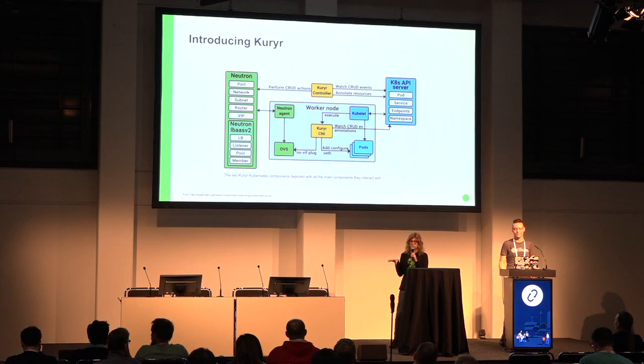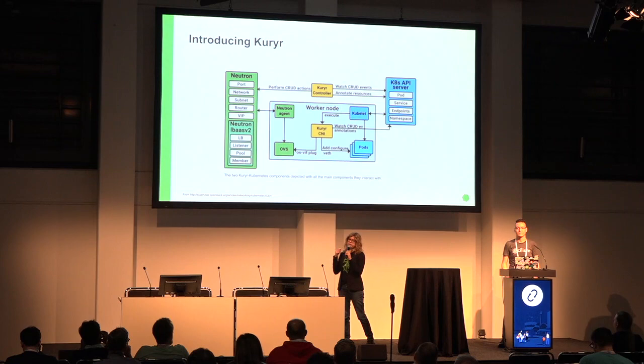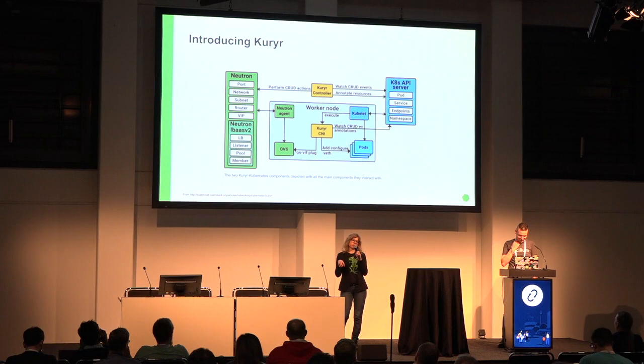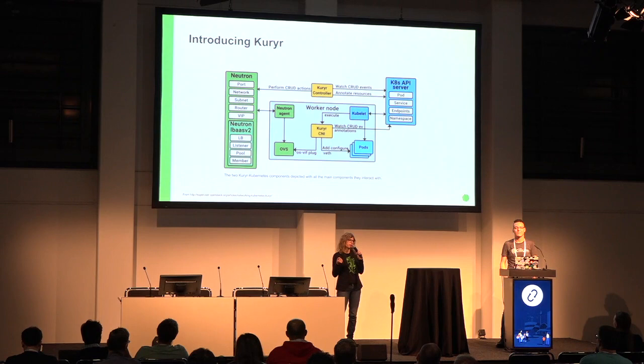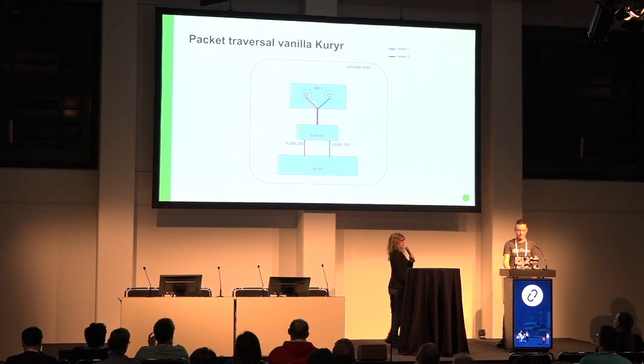The other important task is that the Kuryr controller will annotate the Kubernetes resources with the Neutron information. This is done because the other component — the Kuryr CNI daemon — runs on the worker node where Kubelet is running, and it watches for annotations on the resources. When it sees a new one, it will perform the interface plugin.